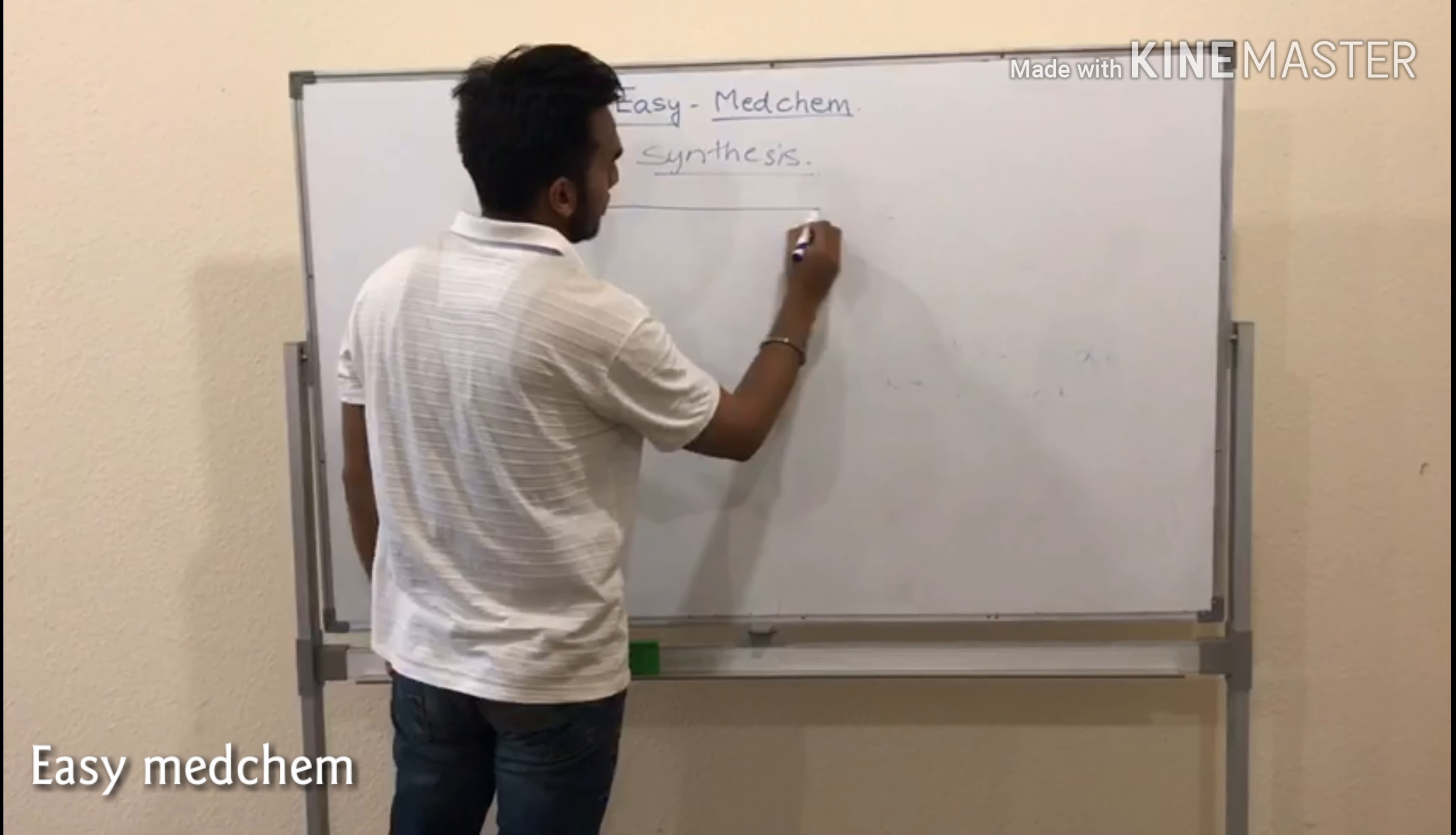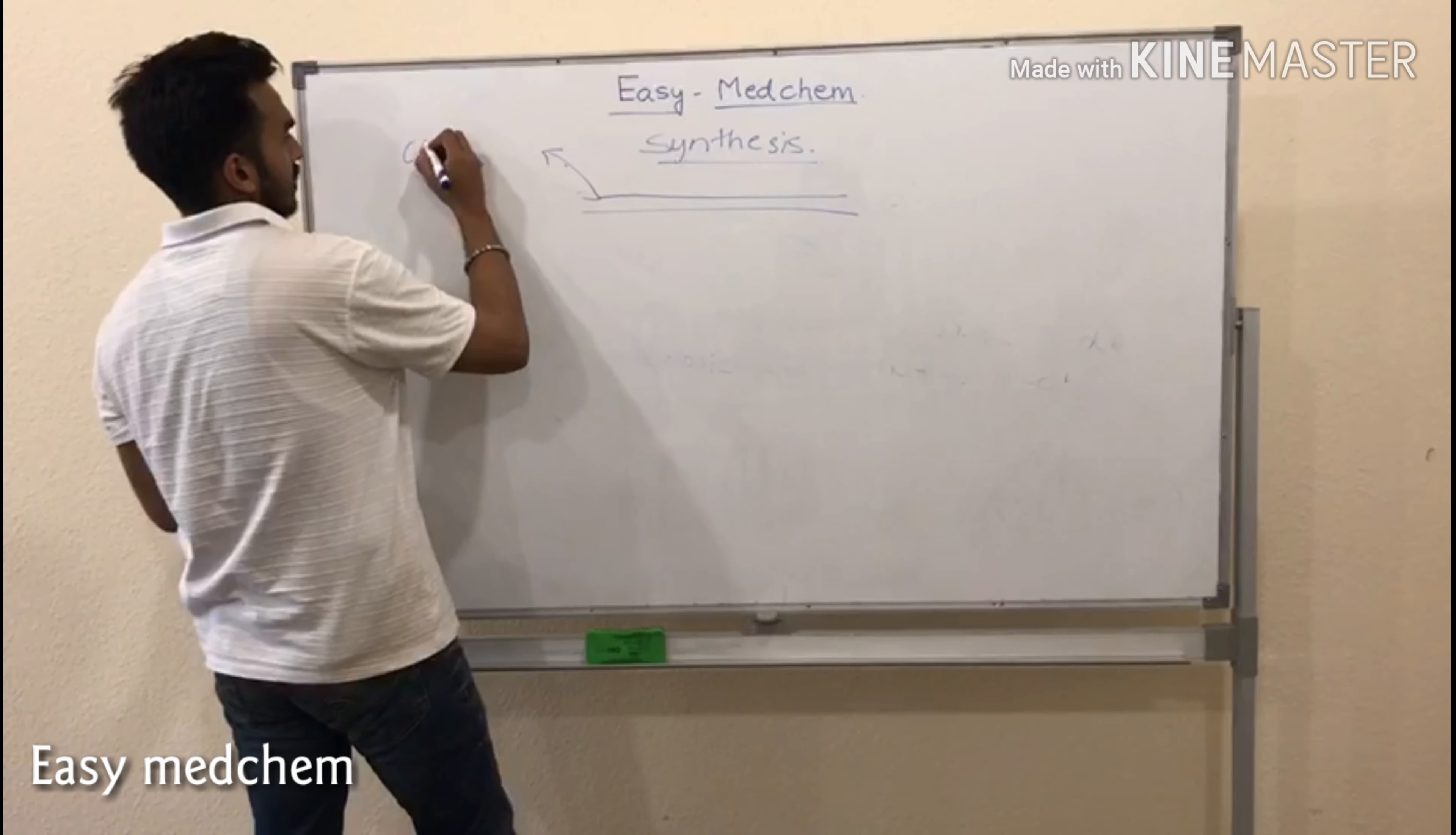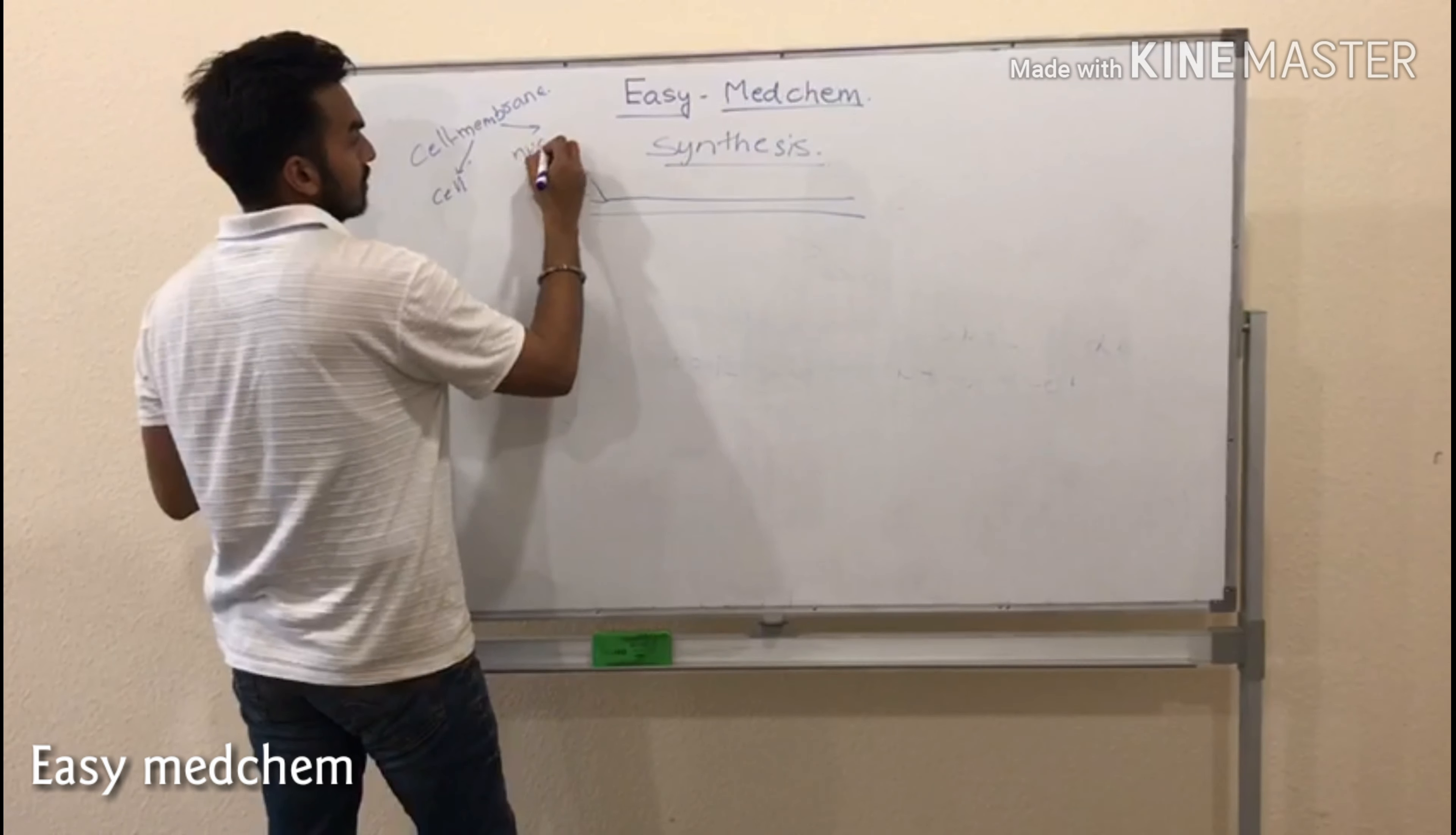In the synthesis of eicosanoids, if this is the cell membrane, the cell membrane can either be a cell membrane of a cell or it can be nuclear membrane also.